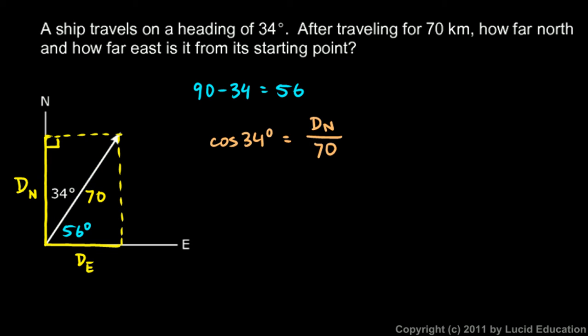So cosine of 34 is DN over 70, and that's kilometers, 70 kilometers. So DN, the distance north, is going to be 70 times the cosine of 34 degrees. And that comes out to 58 kilometers. So that's how far north this ship ends up from its starting point.